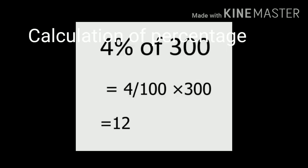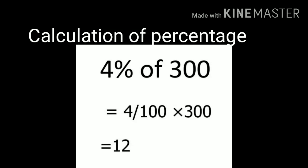Now let's learn how to calculate a percentage. For example: 4% of 300. Percent means 100, so we take 4 upon 100 multiplied into 300. The zeros cancel, giving us 4 times 3, which equals 12. So the answer is 12.